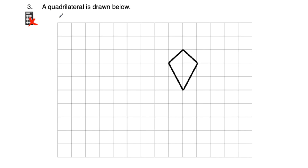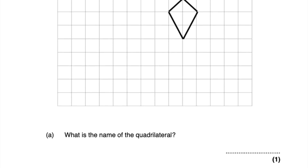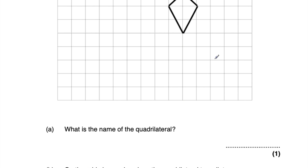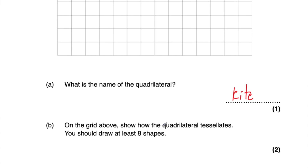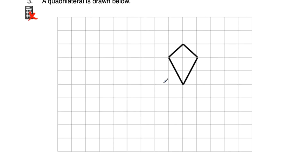Question number three says a quadrilateral is drawn below. We've got a grid with a kite on it - so that's the quadrilateral, a kite. Part A says: what is the name of the quadrilateral? It's a kite. Part B says on the grid above, show how the quadrilateral tessellates - we need to show how that kite tessellates. You should draw at least eight shapes, so let's draw at least eight more kites on the grid.